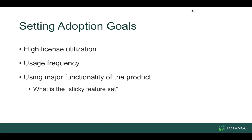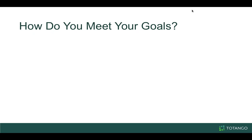Setting those adoption goals — some things to consider: license utilization. If I have fifteen people that should be using it and only five are, I need to make sure all fifteen are using the tool consistently. Usage frequency — should they be logging in every day? Is it the time they're spending each time they go in? And then using major functionality — are they using the sticky things to make sure they're coming back day after day and getting the ROI they need from your product?